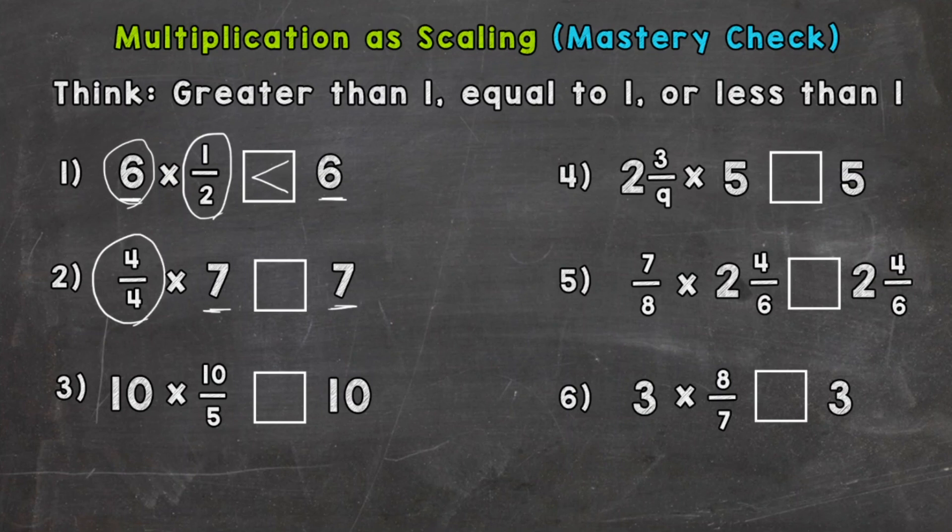Number three, we have 10 times 10/5. We have an improper fraction - 10/5 is actually equal to 2. So we can think 10 times 2 is going to give us 20, and we're multiplying by something greater than a whole, so that side is going to give us something greater than 10. So 10 times 10/5 is greater than 10.